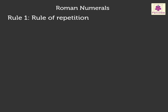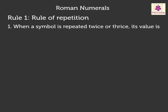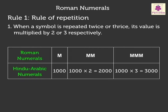Rule 1: Rule of Repetition. When a symbol is repeated twice or thrice, its value is multiplied by 2 or 3 respectively. For example, M is equal to 1000. MM is equal to 1000 multiplied by 2, which equals 2000. MMM is equal to 1000 multiplied by 3, which equals 3000.